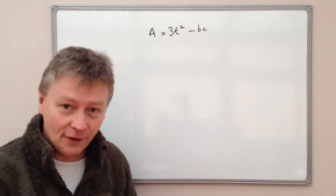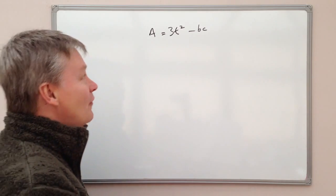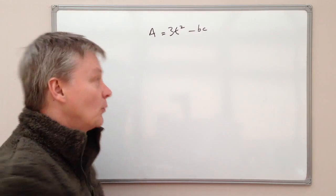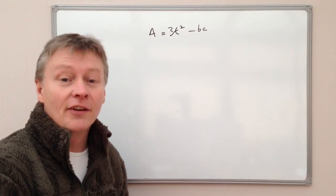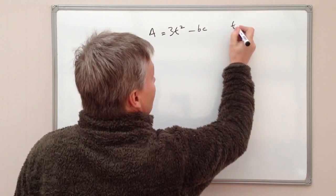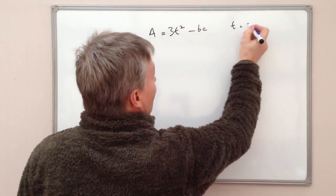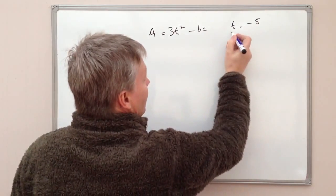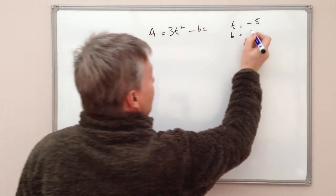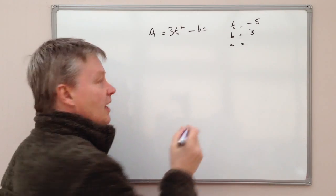And to make it just a little bit worse, what they've done is given us the values of T, B and C, and they want us to work out the value of A for this particular formula. So the value of T that's been given is minus 5, the value of B is 3, and the value of C equals 6.